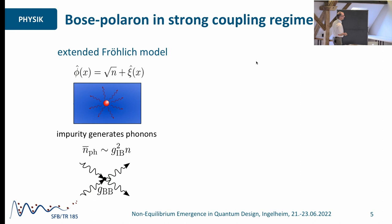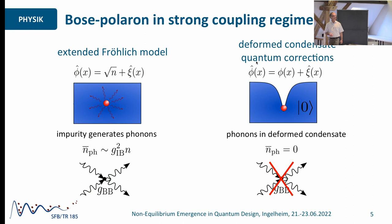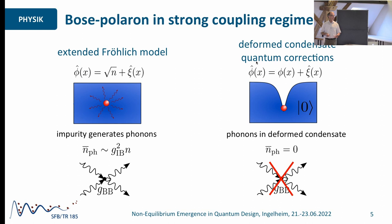One could do this, but it's a very complicated way of approaching it. It turns out there's a much simpler and more clever way: taking into account the back-action of the impurity on the condensate beforehand, and then considering phonons on this deformed background. The advantage is that on this deformed background, the number of new phonons created in that model is actually small — not zero, but small. Therefore, higher order processes of phonon-phonon interactions can indeed be ignored. And that is the basic approach I'm going to follow.